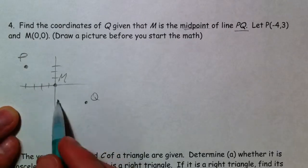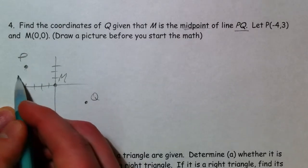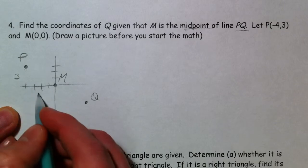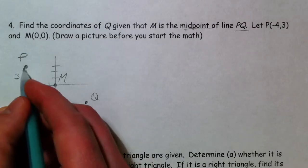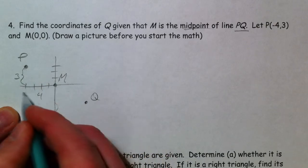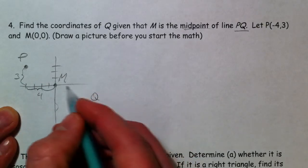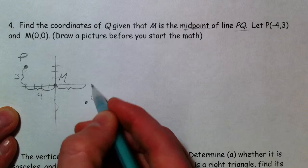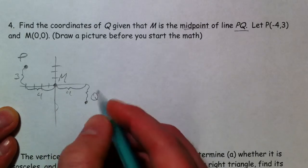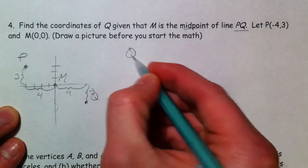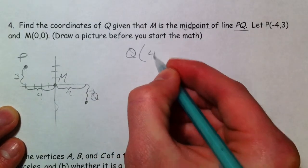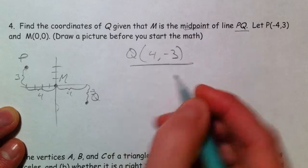I think this is very easy visually because notice how we got from P to M. We went down 3 and over 4. So let's continue the pattern and go over 4 and down 3. So Q would be (4, -3). Done and done.